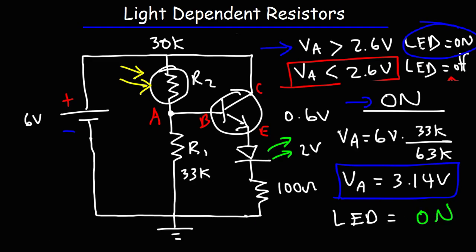When we turn the main light on, the green LED is on; when we turn the main light off, the green LED is off. To make this circuit, just place the LDR in this position as opposed to the other, and make sure you choose the appropriate R1 and R2 values so that you get the right VA values to turn the circuit on and off.